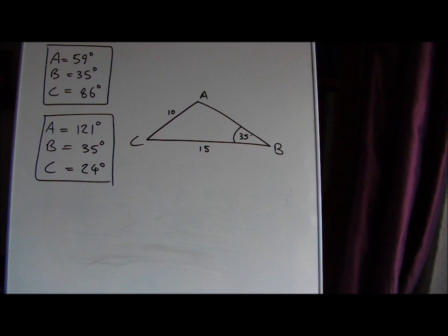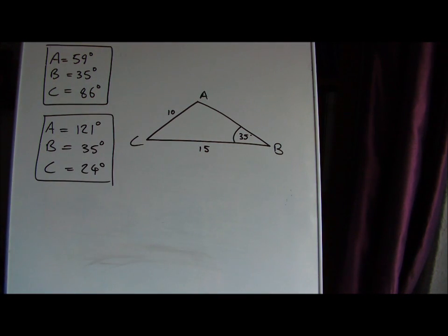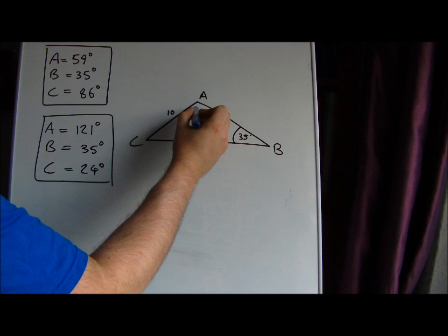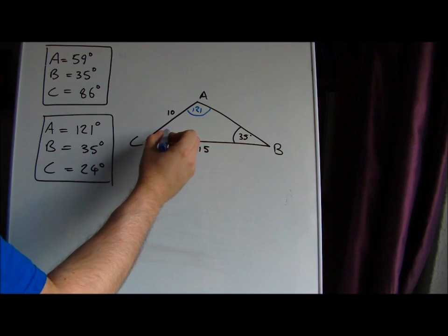We'll just finish off by seeing how the two sets of solutions match up to the initial sketch that we made. So this was the information given in the problem - angle B is fixed at 35 degrees, and the length of those two sides are also fixed. Now this seems to match up with this set of solutions here. We worked out that was 121 degrees, and this was 24 degrees.